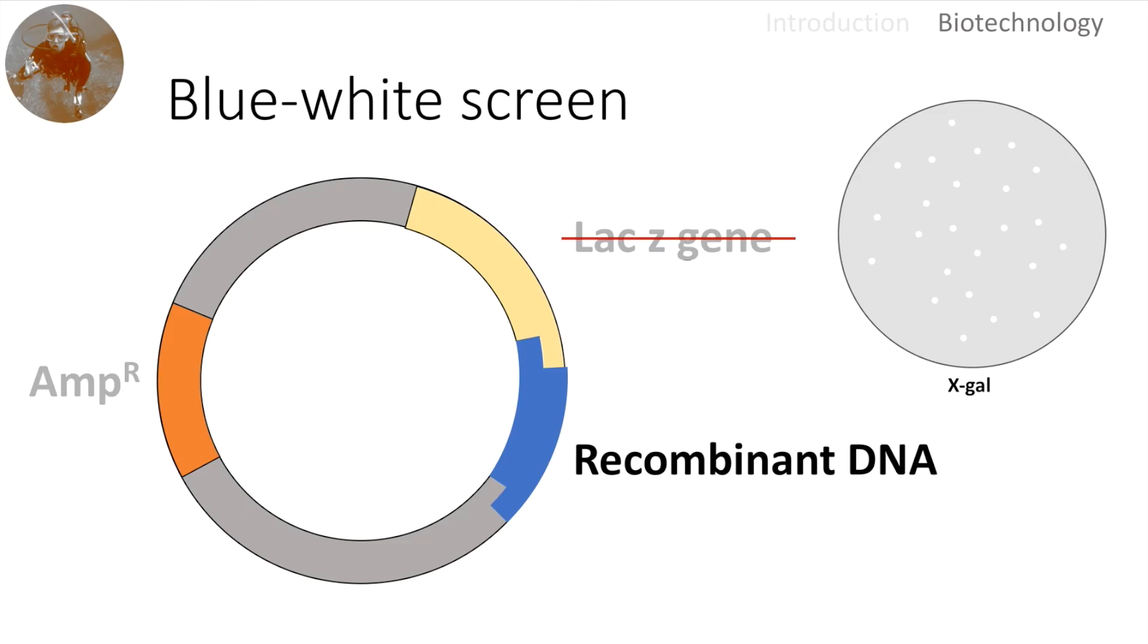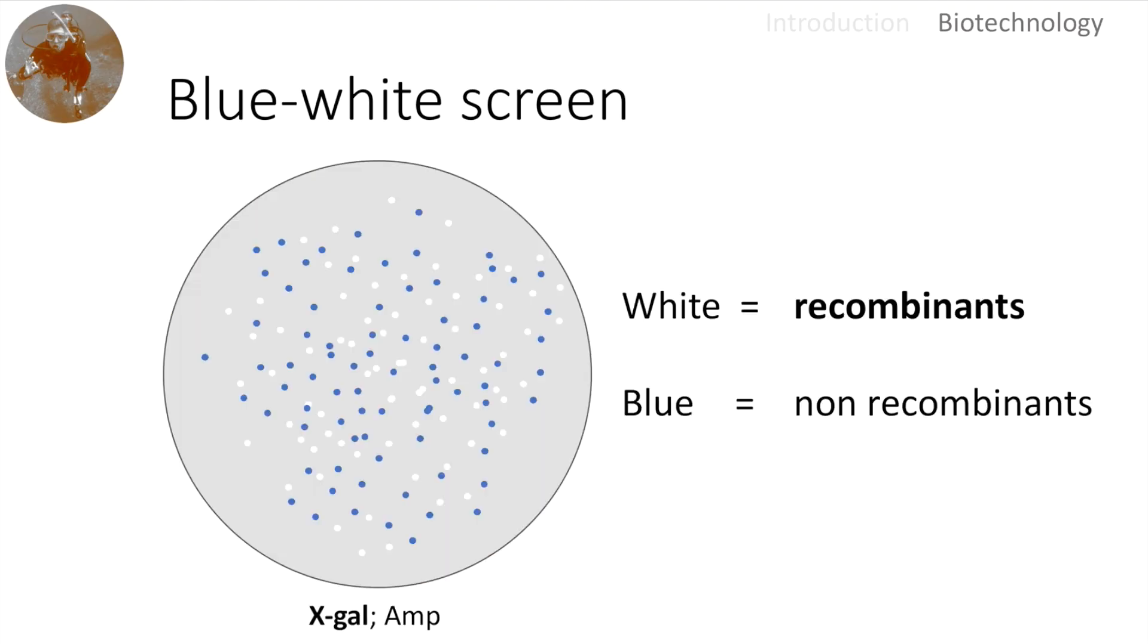In the laboratory in real life a screen would rather look like this. We have a plate this contains X-gal and ampicillin making sure that only bacteria with a plasmid will survive, and then we will find blue dots and we will find white dots and these dots represent the colonies of bacteria. A white colony means we have successfully made recombinant DNA. A blue colony on the other hand means there is no recombinant DNA.